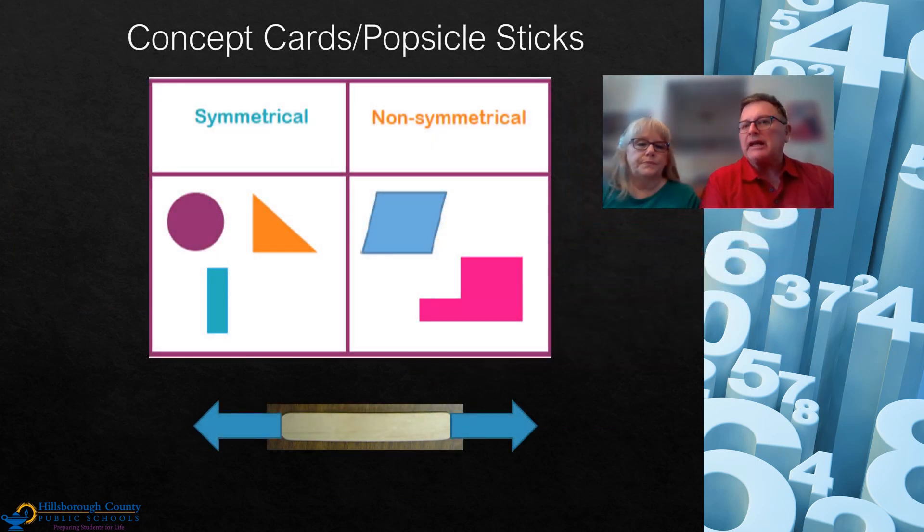Because this unit and unit 15 are very vocabulary heavy, concept cards are a good strategy to help kids understand the various geometric ideas. Here, this is an example of shapes that have symmetry or that don't have any symmetry. But I could do it with lines, with parallel, intersecting. Any type of vocabulary I could do a concept card with. You could use them in your journals and so forth. We also talked about popsicles, how you could take a popsicle stick and then just draw arrows to show that it's a line. Or you could do it as a line segment or a ray.